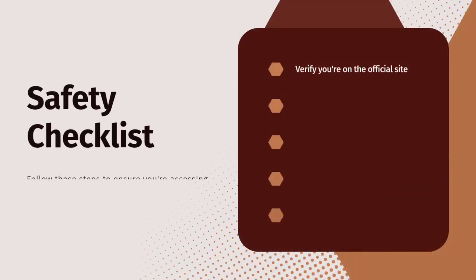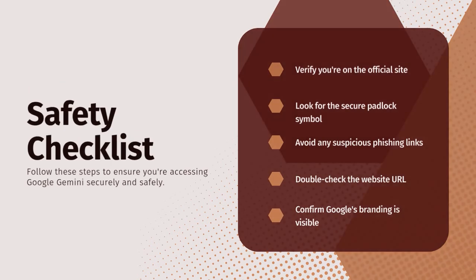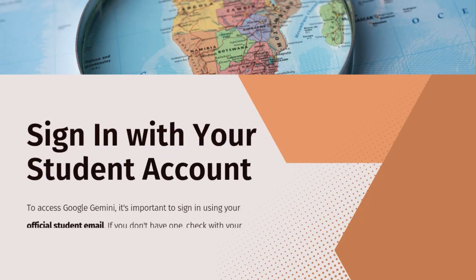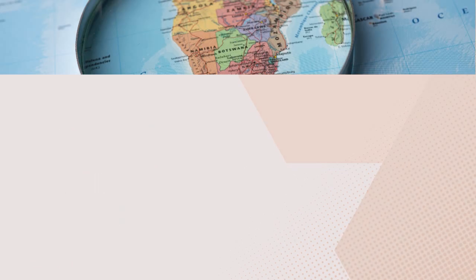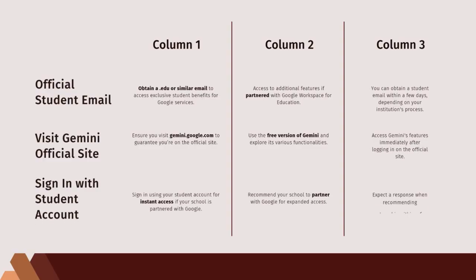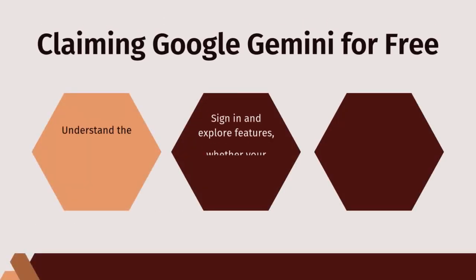If your school isn't partnered yet, don't panic. You can still use the free version of Gemini, which gives you access to almost all the basic features like writing help, summarizing, brainstorming, and simple coding tasks. The only difference is that the free tier may have some usage limits per day, and it might not include the most advanced AI models like Gemini 1.5 Pro.